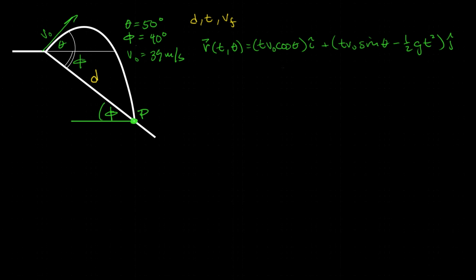If we knew what the time was, that would tell us two things. One, we'd know the height — since this is my point of reference, that would be Y_final. And along the same path, this would give me X_final. So X_final is from here to here, and Y_final is from here to here. And yes, this is a 90-degree angle.